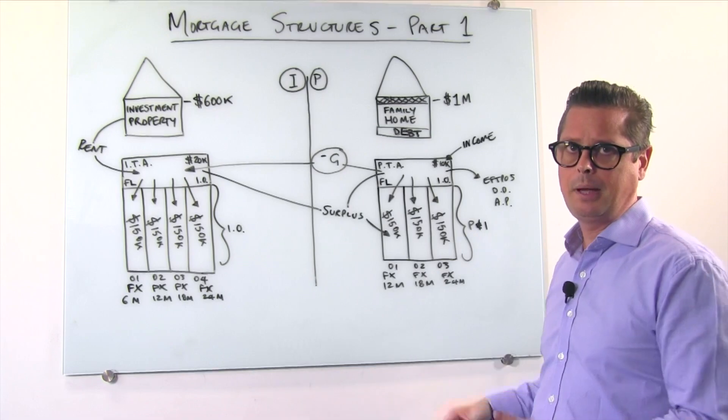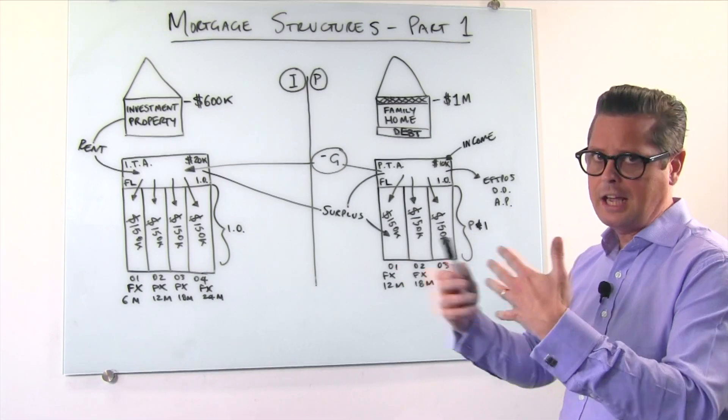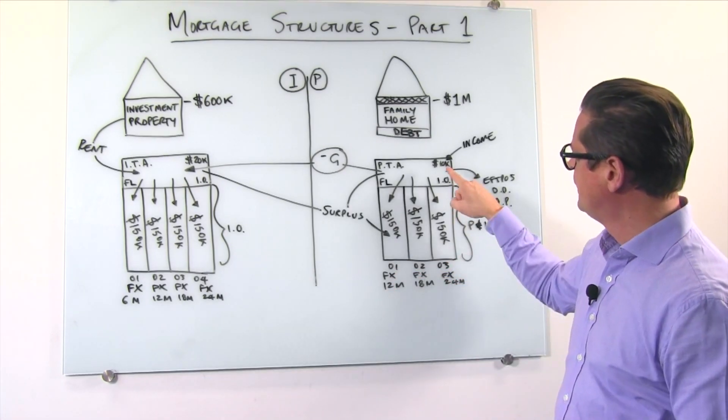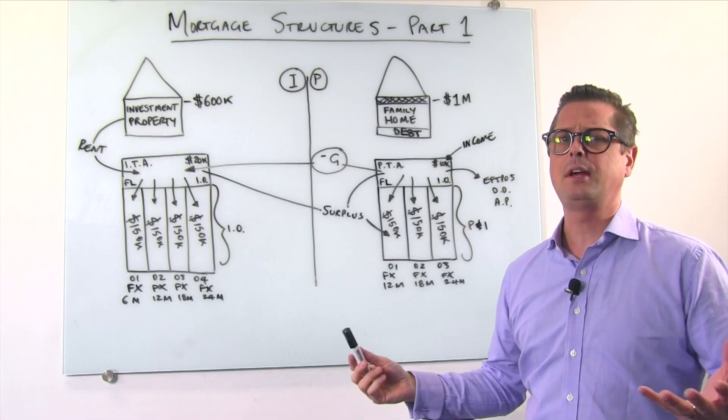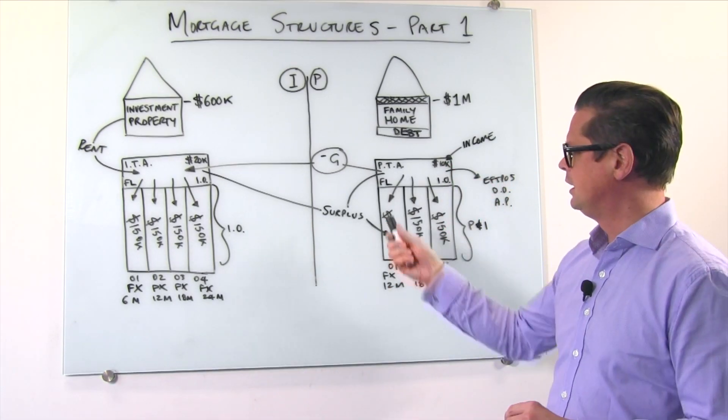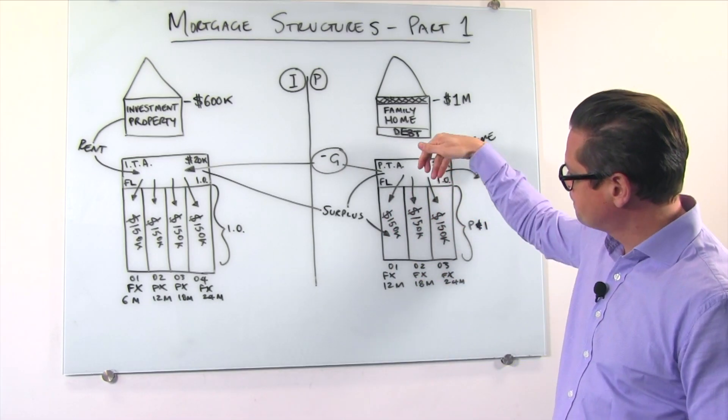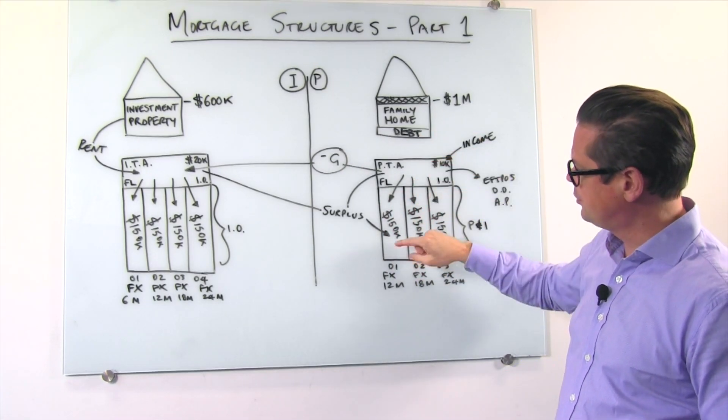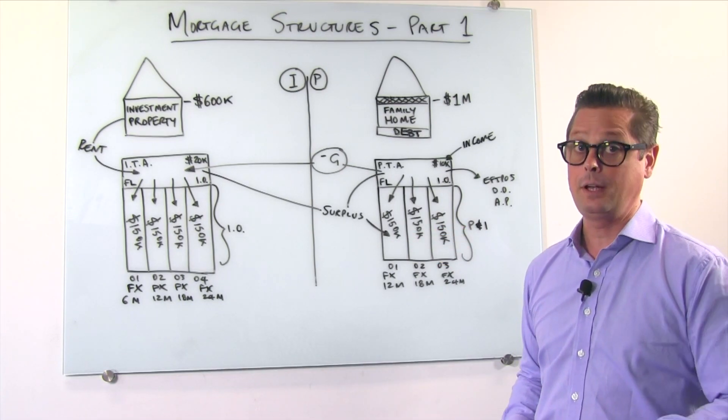EFTPOS, direct debits, automatic payments, that kind of thing. It's just a cash flow facility basically. Again we've put a buffer of ten thousand dollars, there's no magic reason for that, it's just like an overdraft facility. It's floating and interest only. It's the account that the principal and interest payments on their debt come out of as well.